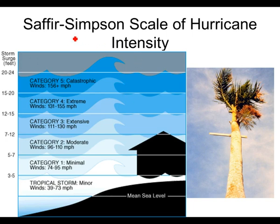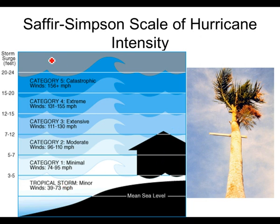The Saffir-Simpson scale describes hurricane intensity. Category 5 is the strongest, with winds of 156 miles per hour and up and a storm surge of 20 to 24 feet. It goes down to Category 1, and below that is a tropical storm, and below that a tropical depression. In these high-category storms you would have debris like a 2x4 driven through a palm tree, as shown in this picture.